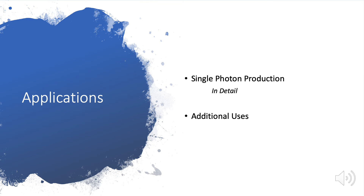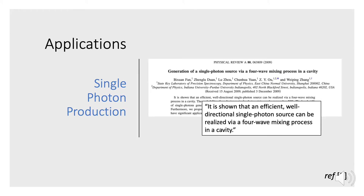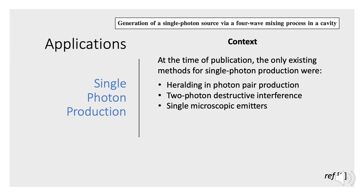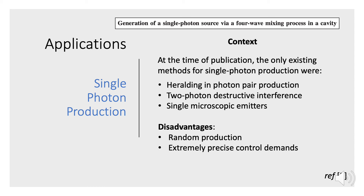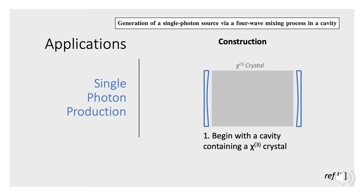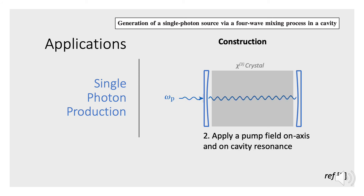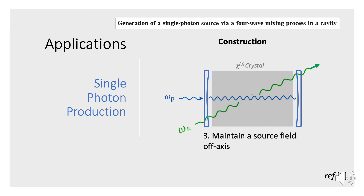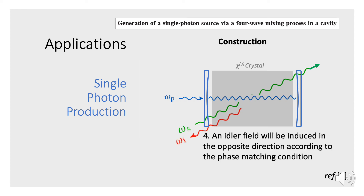Let's look at the application of single photon production in detail. This is based on a 2009 paper showing that an efficient, well-directional single photon source can be realized via a four-wave mixing process in a cavity. At the time, the only existing methods for single photon production were heralding and photon pair production, two-photon destructive interference, and single microscopic emitters — which had the disadvantages of very random photon production and extremely precise control demands. The system is constructed with a chi-3 crystal in a cavity, with a pump field that's on-axis and on-cavity resonance — high Q factor. A source field is applied off-axis, and an idler field is induced according to the four-wave mixing phase matching criteria, in the opposite propagation direction from the source field.